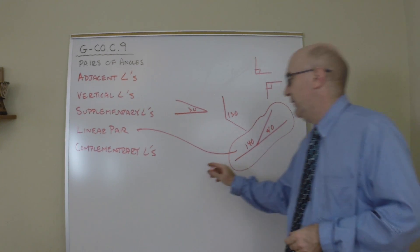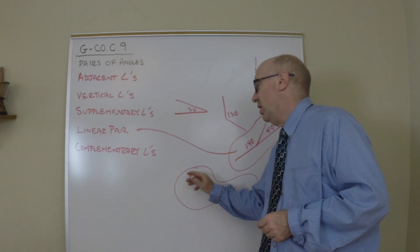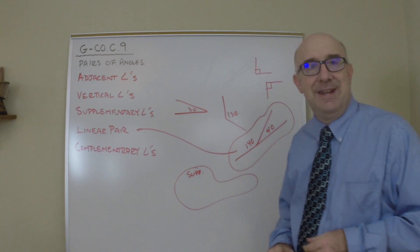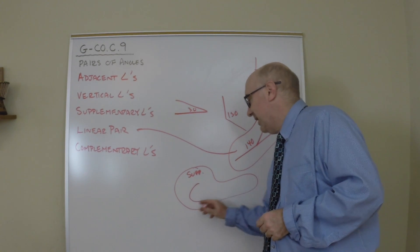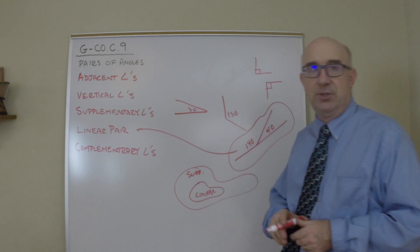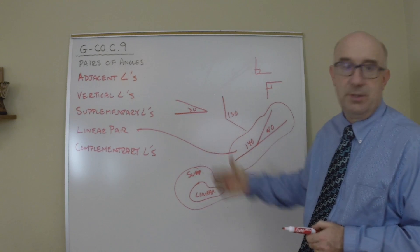This is like, if you want to think about it, this is the boundary of all supplement angles. Okay, this is a little Venn diagramming. Inside of that is our linear pair. This group is a special type of the general supplements.